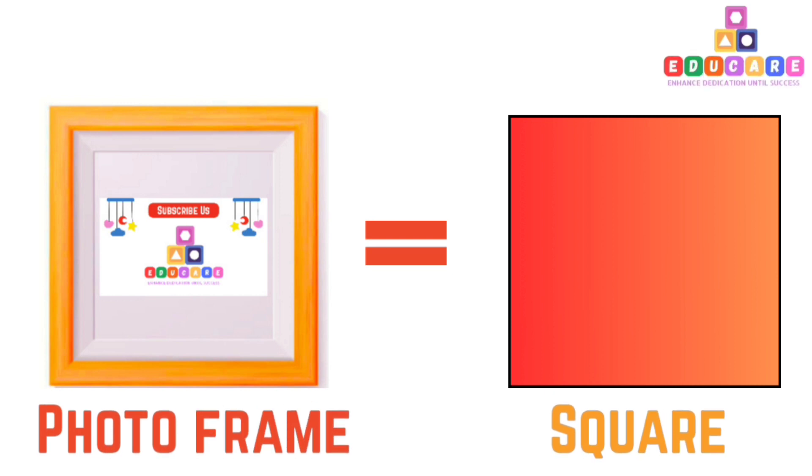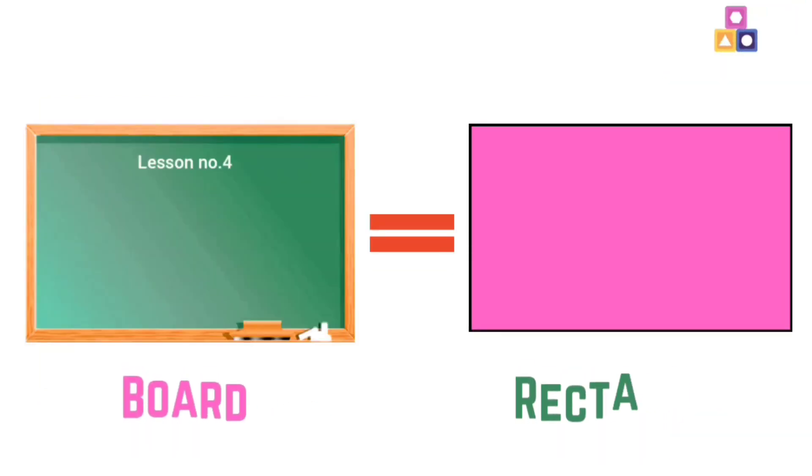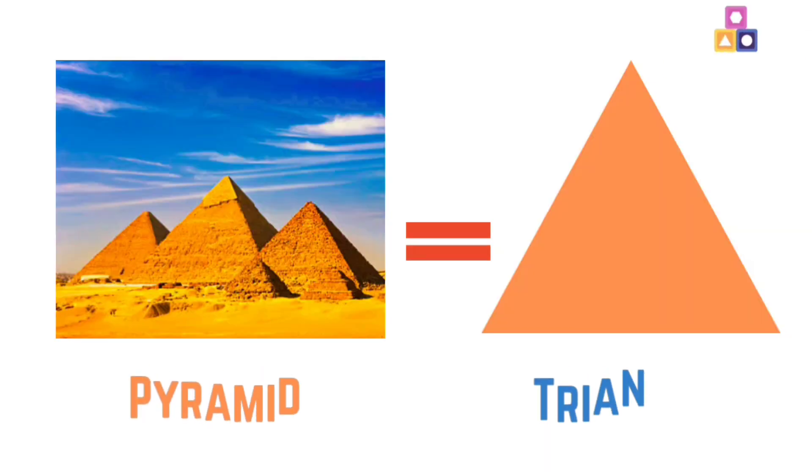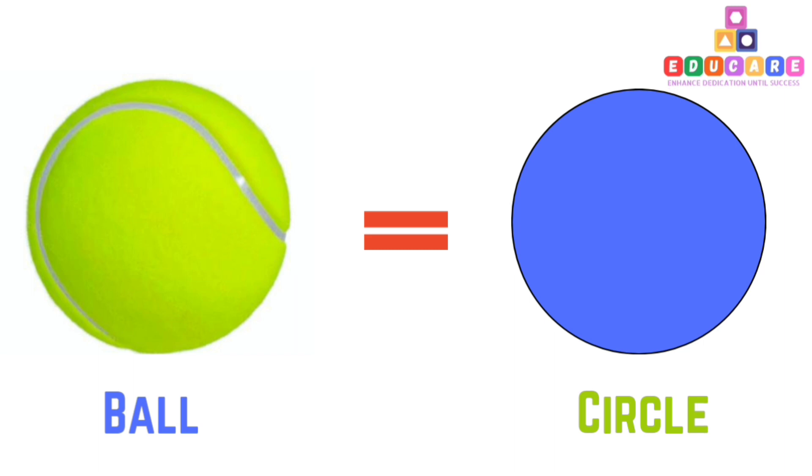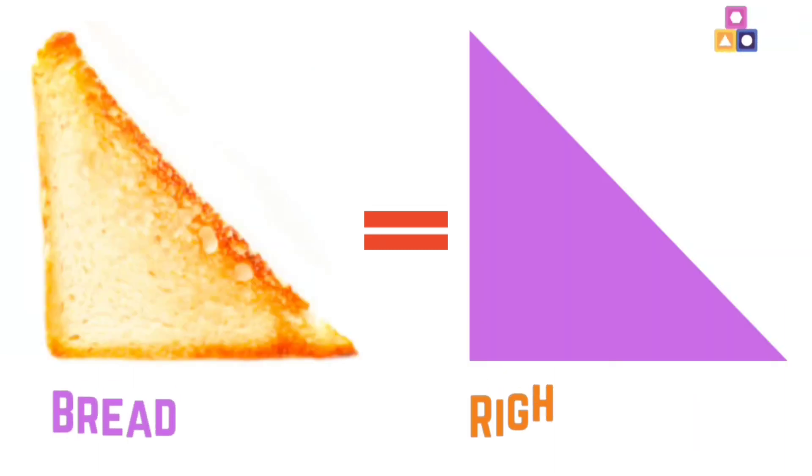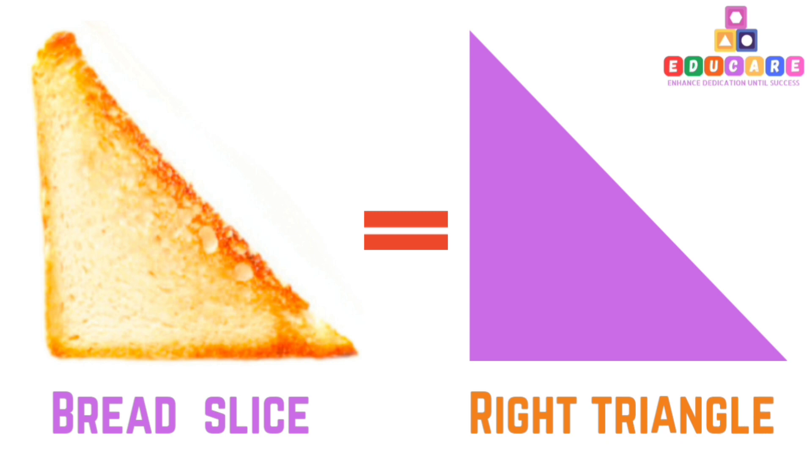Photo frame is example for square. Board is example for rectangle. Pyramid is example for triangle. Ball is example for circle.